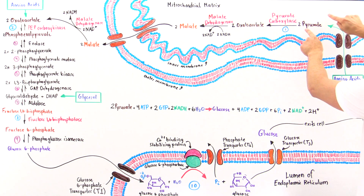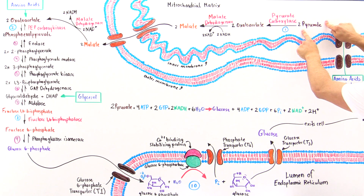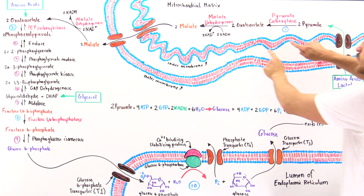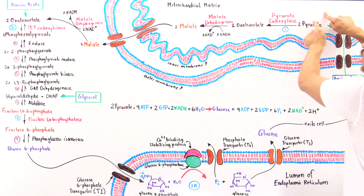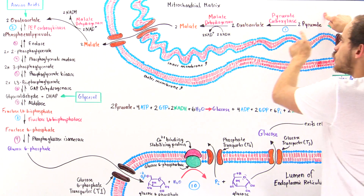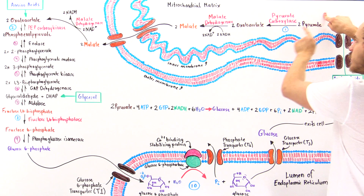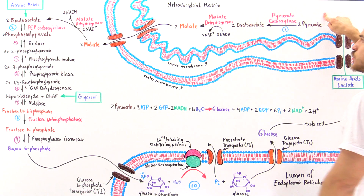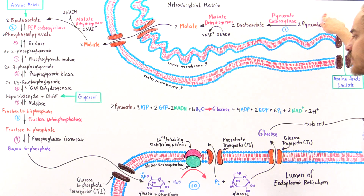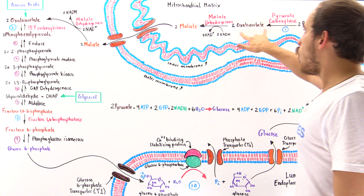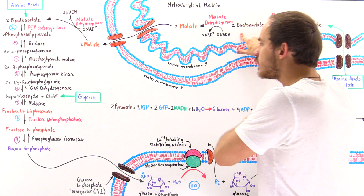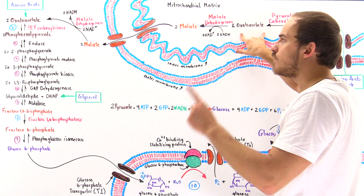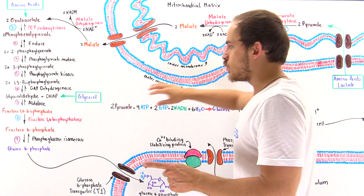Because we take two pyruvates and transform them into two oxaloacetates, we use two ATP molecules and two CO₂ molecules in step one. Once we form that oxaloacetate, that molecule can move on to step two.